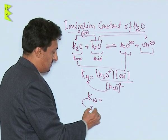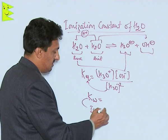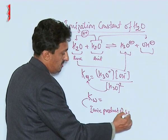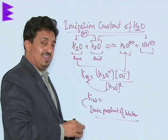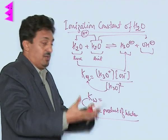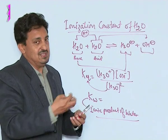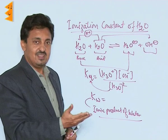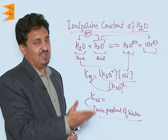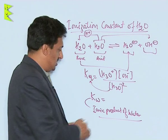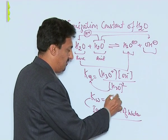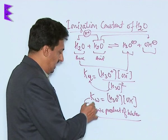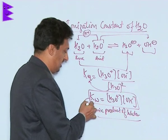This Kw is called the ionic product of water. The ionic product of water means it is the product of the concentrations of the ions given out by water — which are the H⁺ and the OH⁻ ions. So Kw is basically the product of H₃O⁺ ion concentration and OH⁻ ion concentration, and that is the expression for Kw.